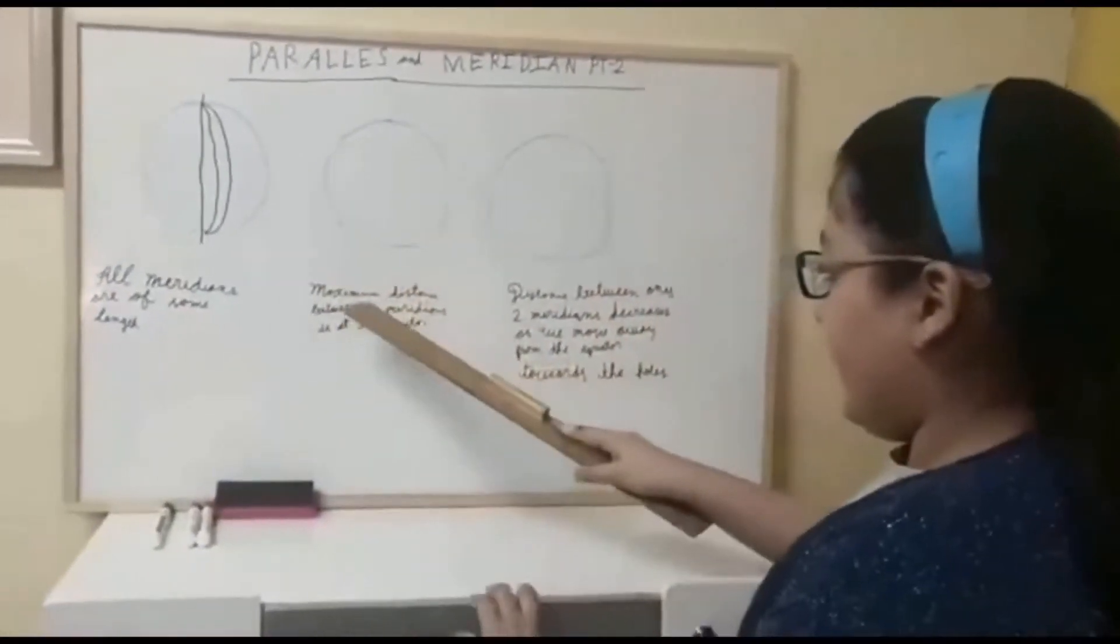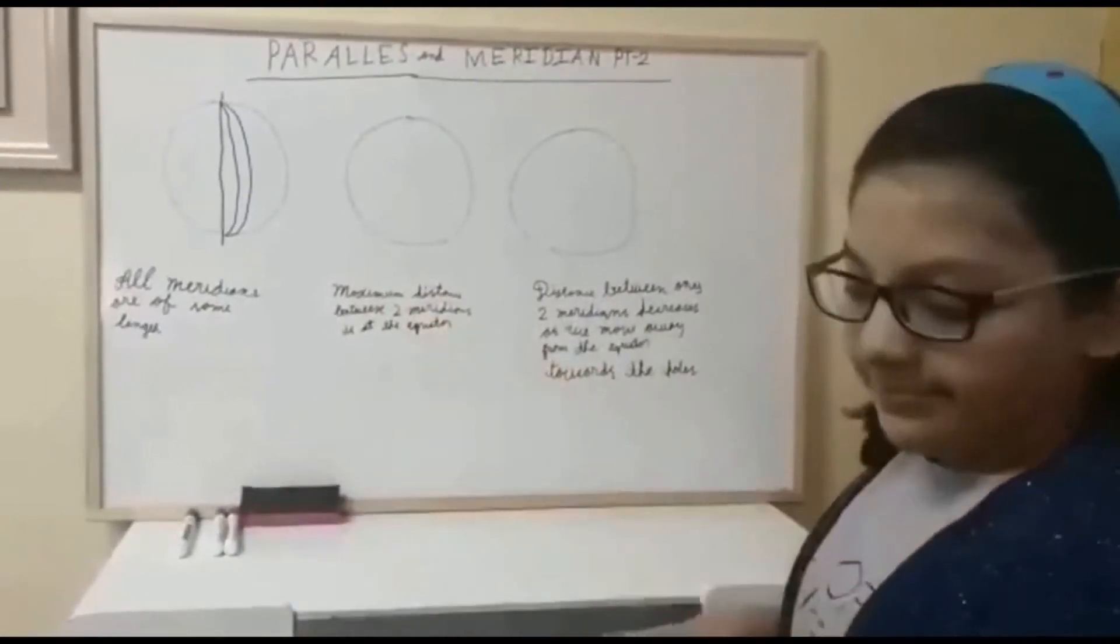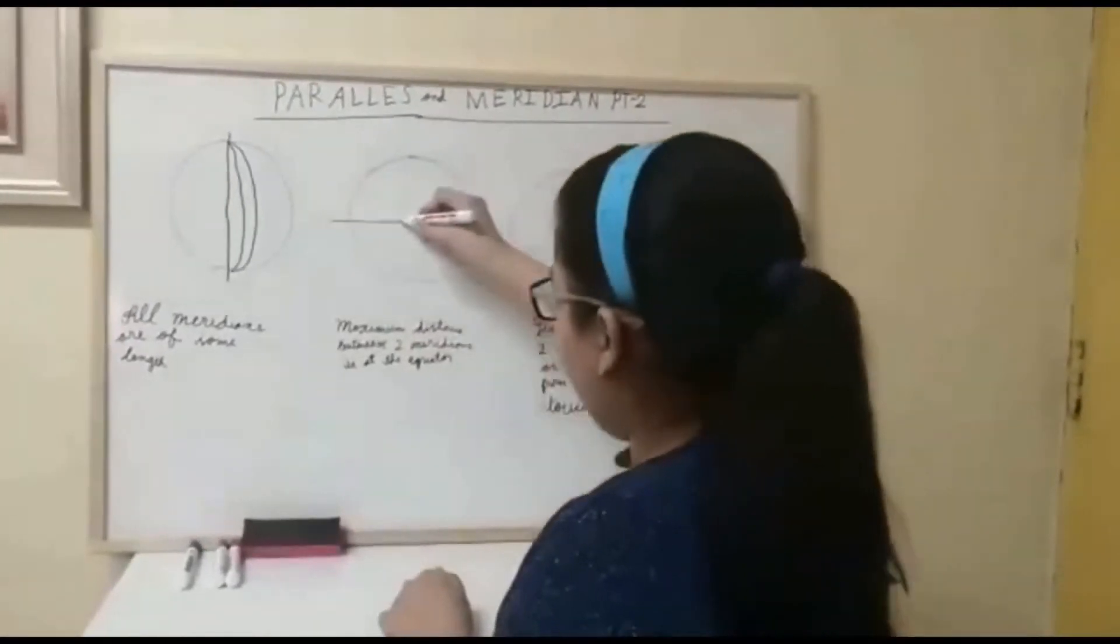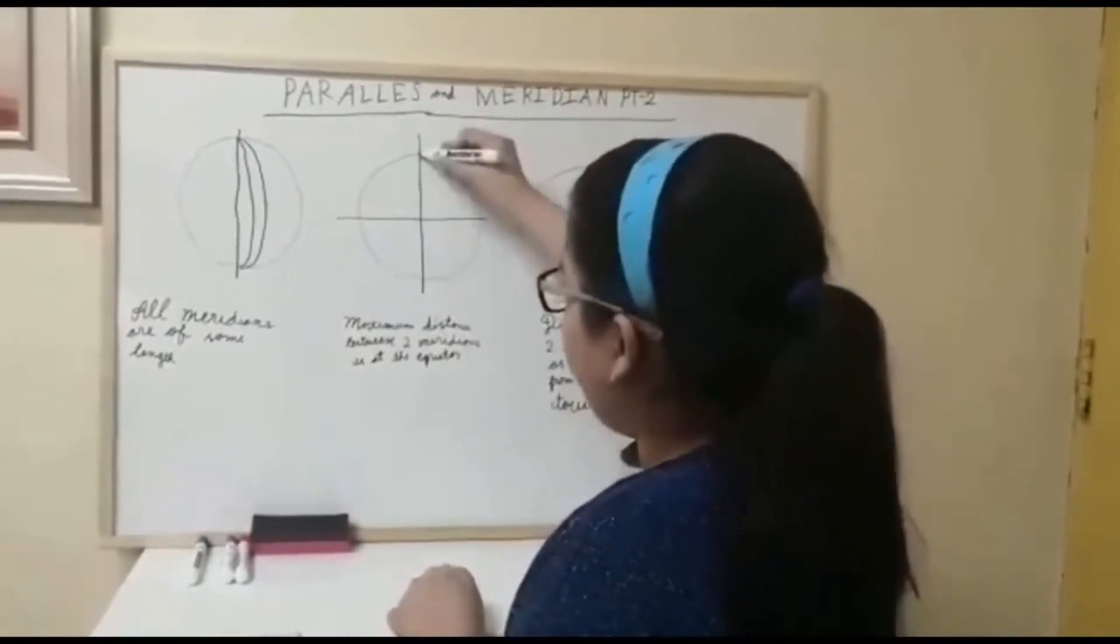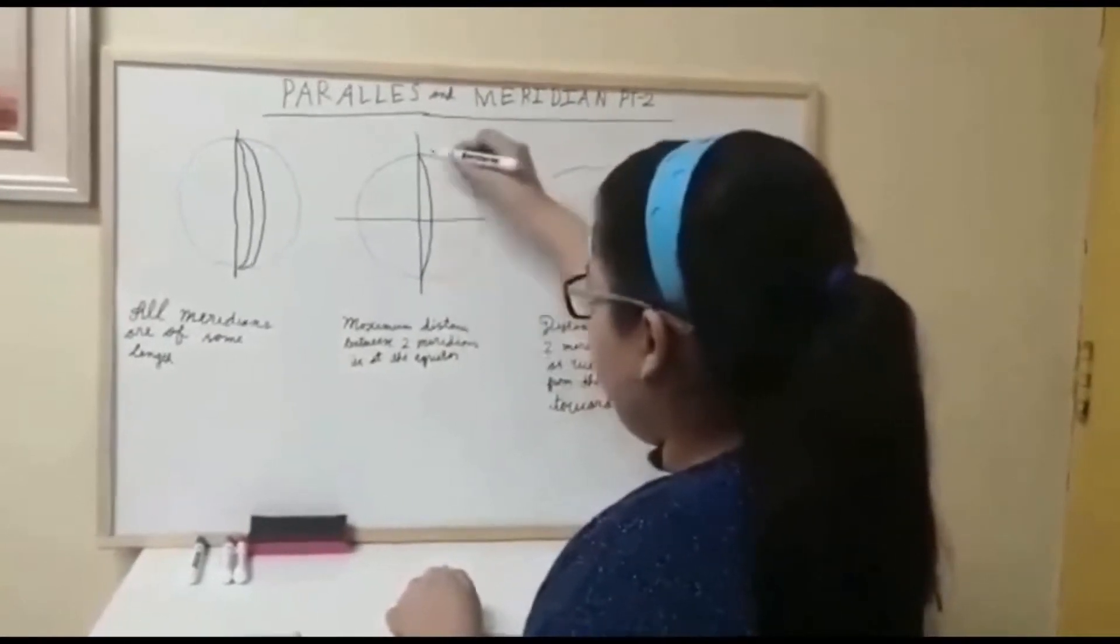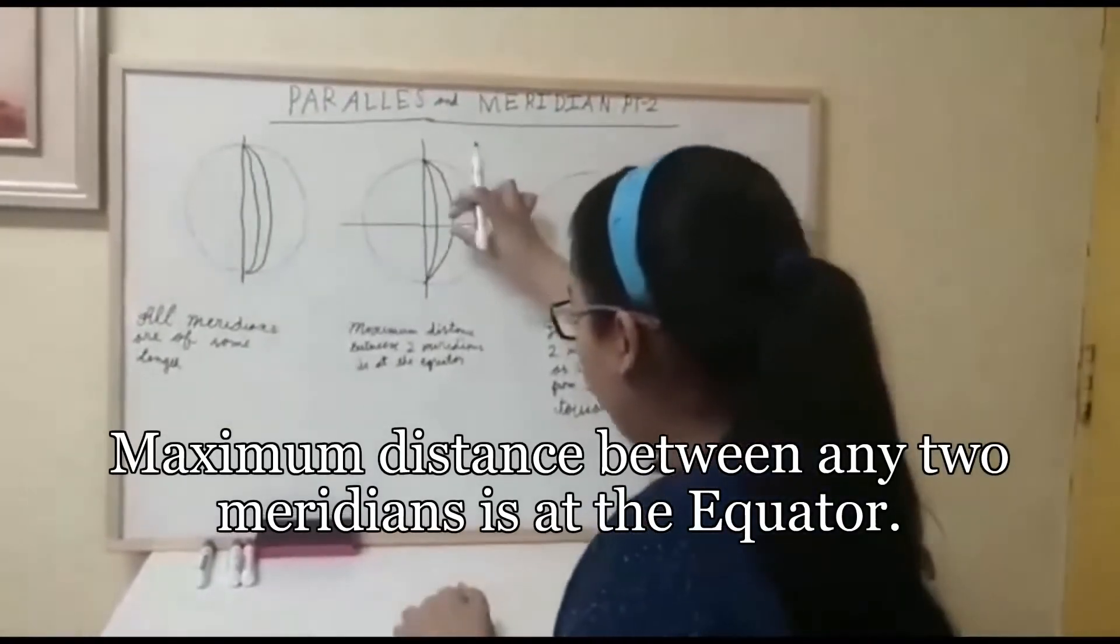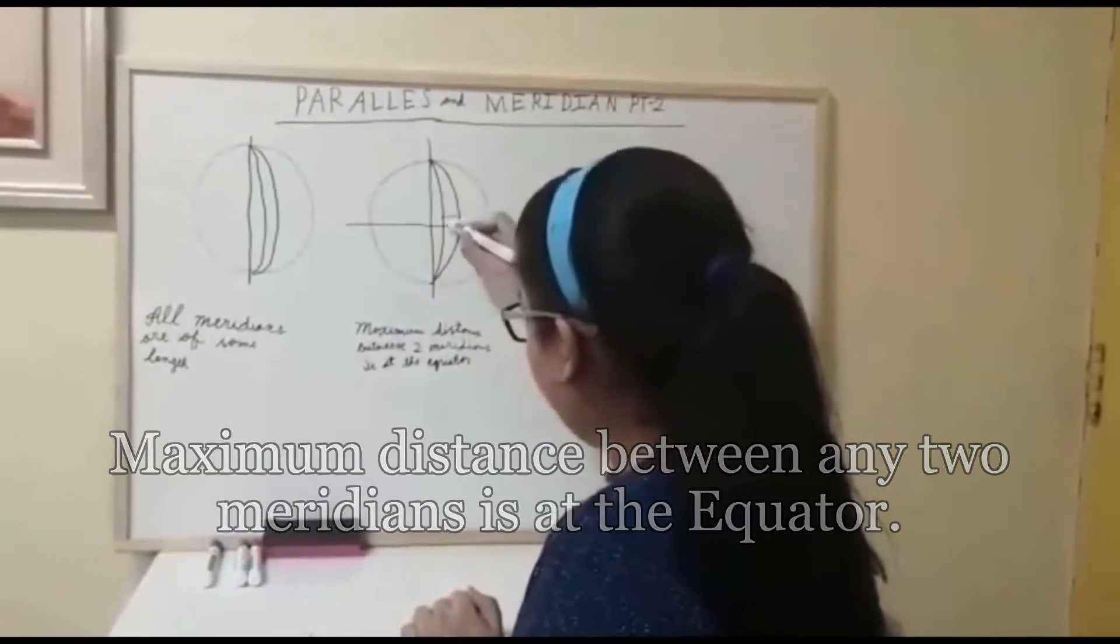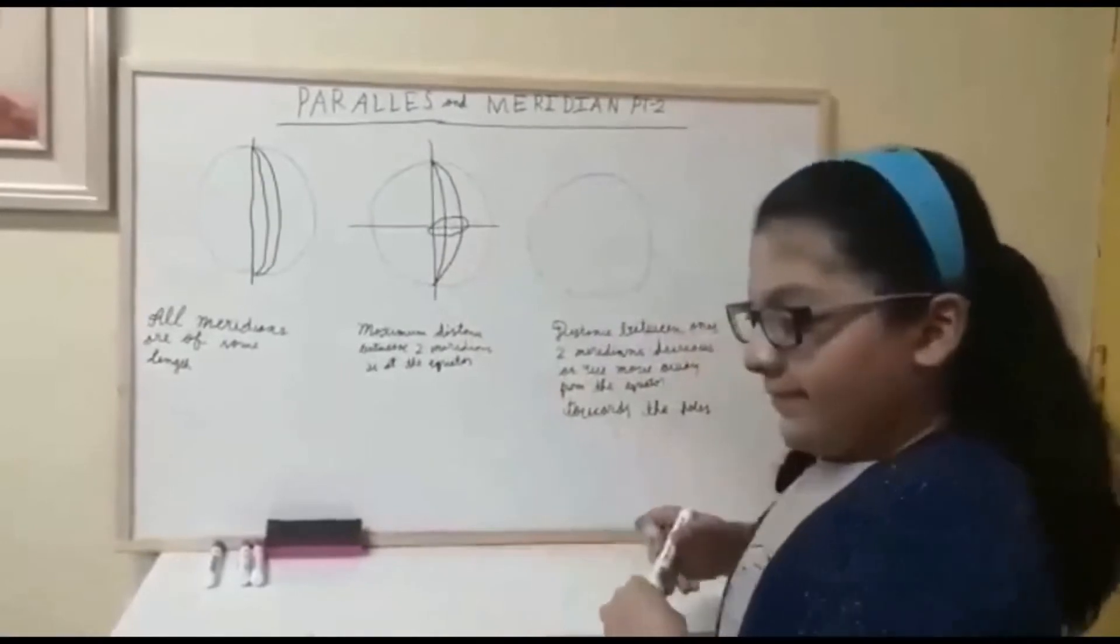The second feature is maximum distance between any two Meridians is at the Equator. First we draw the equator and then the prime Meridian. I am going to draw two Meridians as well. So as you can see the maximum distance in between is at the equator. So distance between the Meridians at the equator is the maximum.